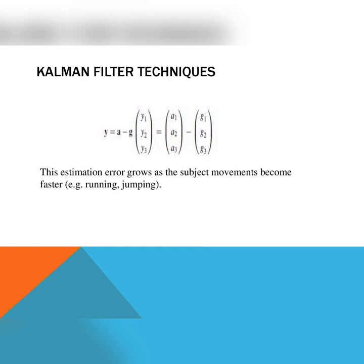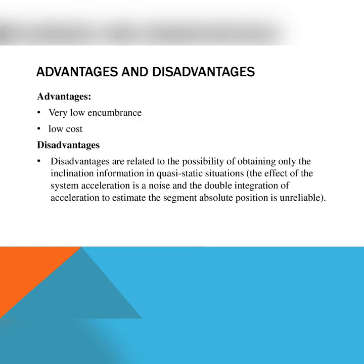The estimation error grows as the subject's movement force becomes faster, for example during running and jumping. This technique is called the Kalman filter. Regarding its advantages and disadvantages: the advantages are that it is very low in cost and very low in encumbrance. The disadvantage is that it is limited to obtaining only inclination information in quasi-static situations — that is, the effect of system acceleration is a noise and the double integration of acceleration to estimate the segment's absolute position is unreliable.